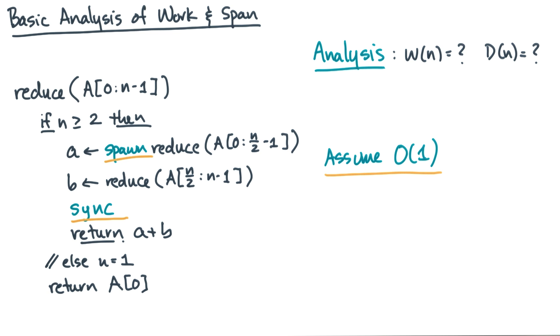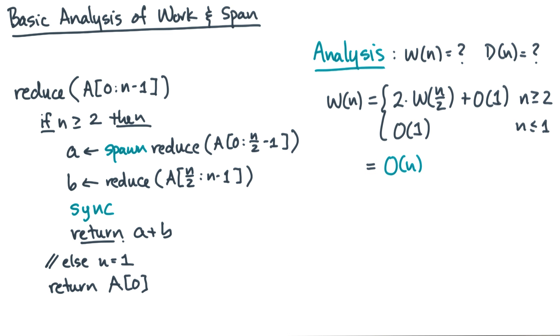Now recall that analyzing the work is just counting total operations. Therefore, if spawn and sync are essentially constant time, then for the analysis, we can effectively ignore the spawns and syncs and just do the usual sequential analysis. So the recurrence for work looks just like the recurrence for sequential execution time and we'll get linear work.